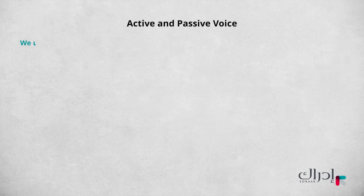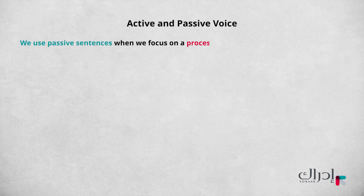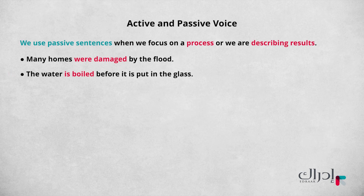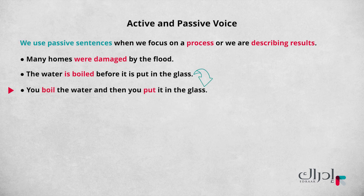Finally, we use passive sentences when we focus on a process or we are describing results. For example: 'Many homes were damaged by the flood.' In this sentence, we know the flood did the action, but we care more about the homes — we want to put that information first. Here's another example: 'The water is boiled before it is put in the glass.' Here we are focusing on the process. We could say 'You boil the water and then you put it in the glass,' but the passive focuses more on the process.